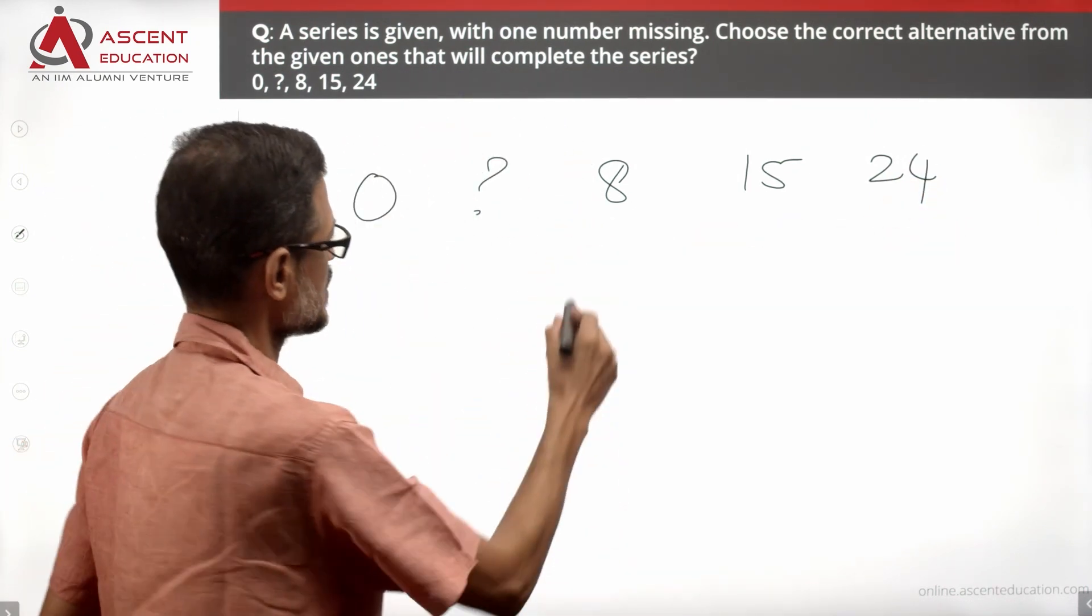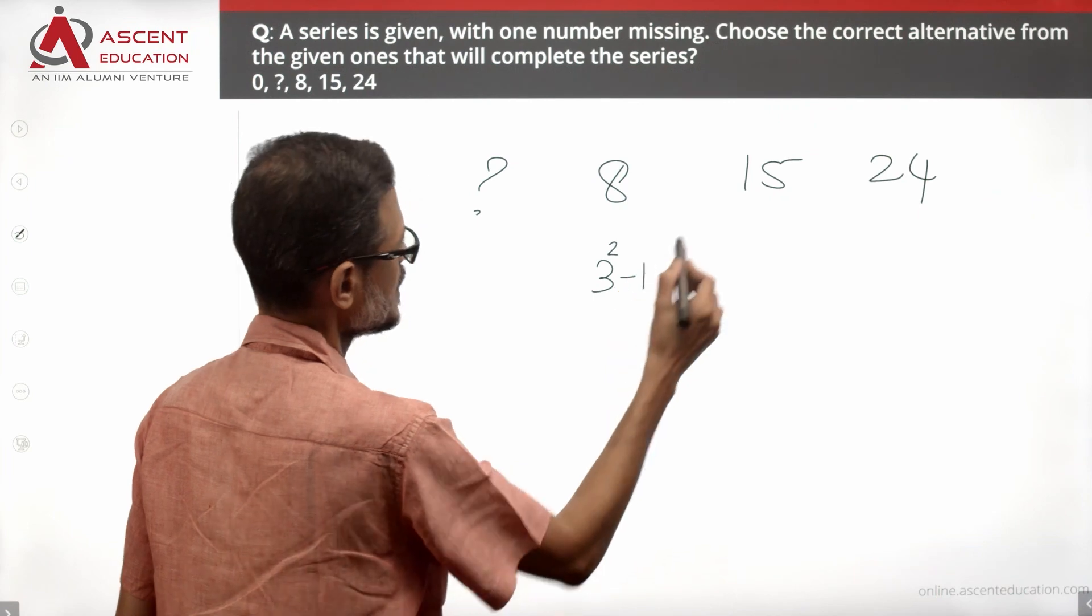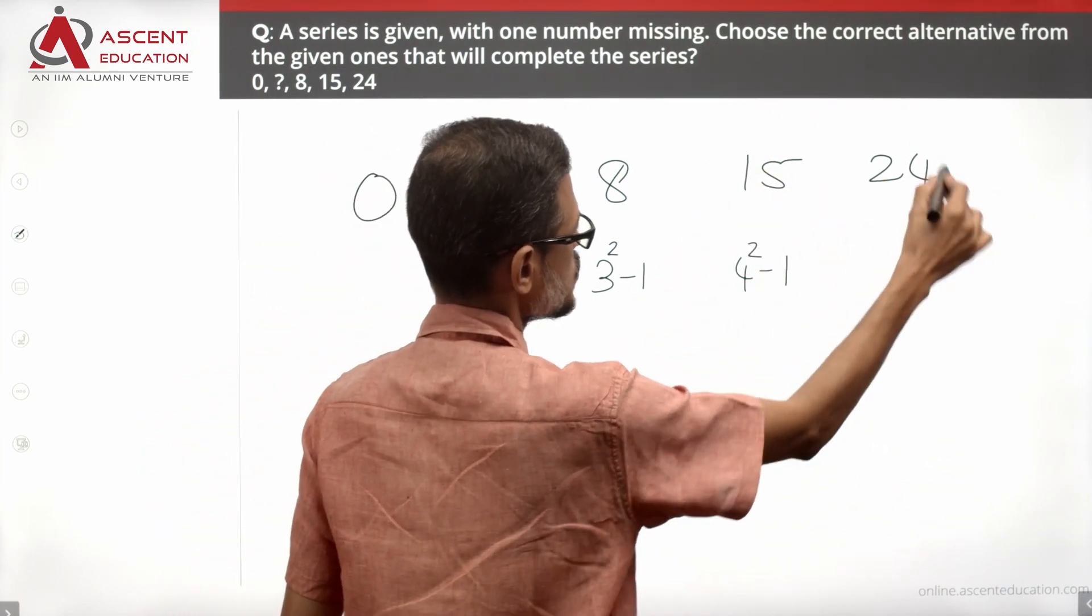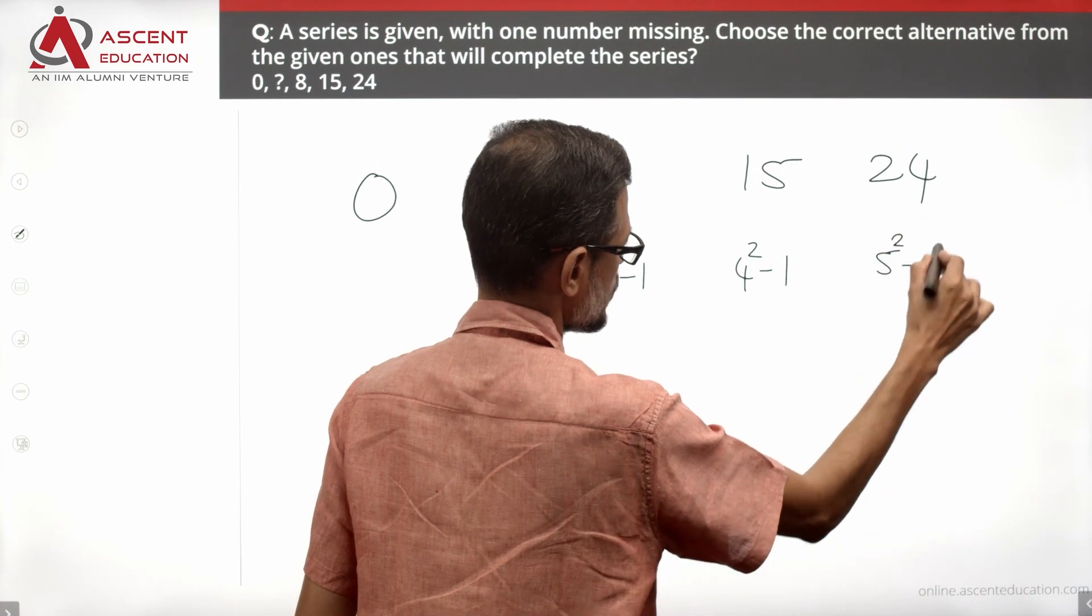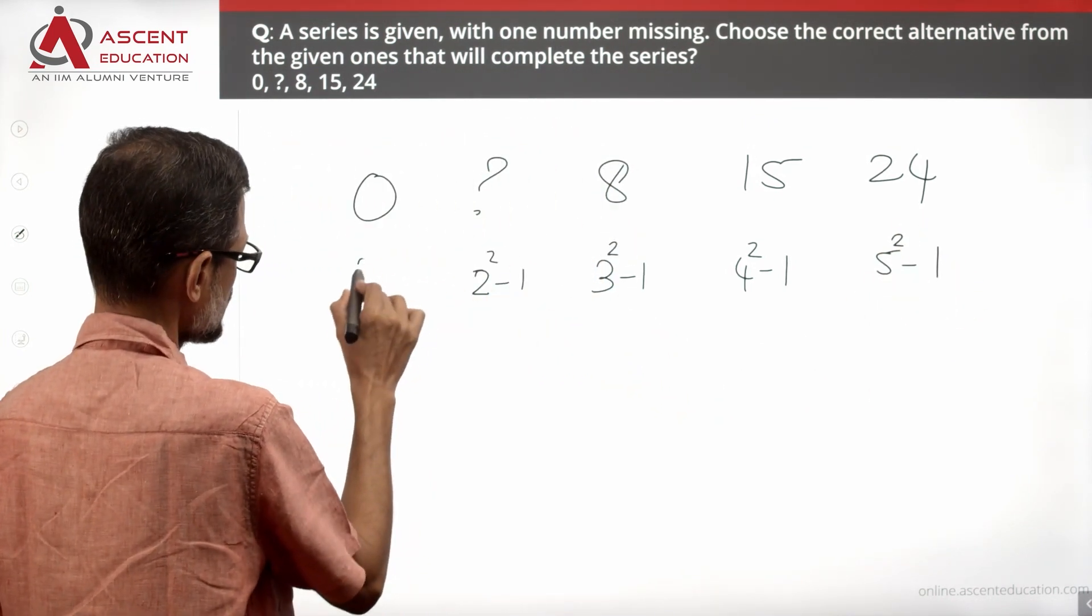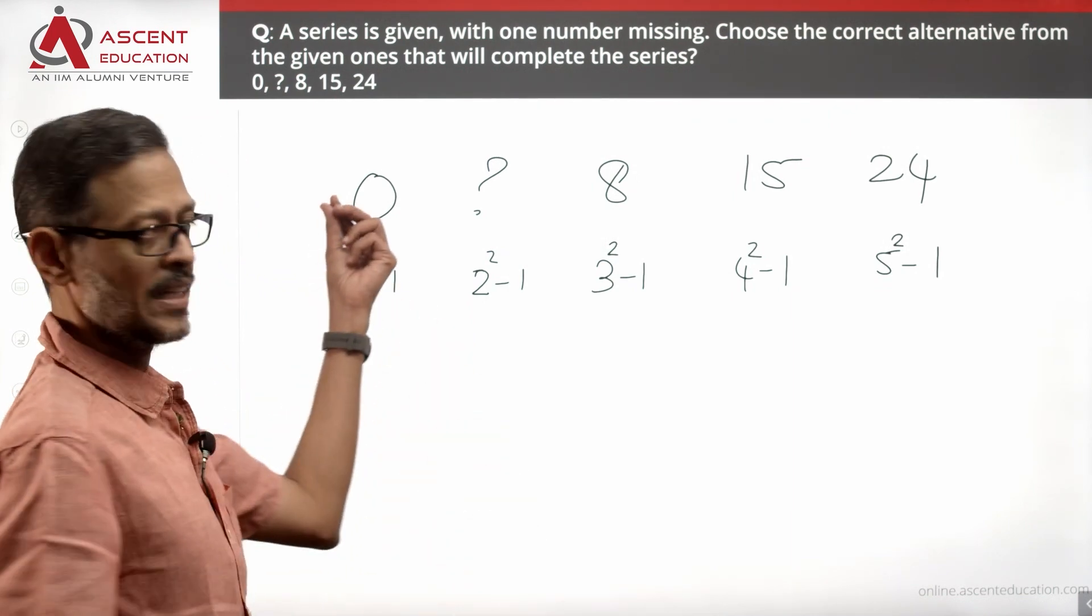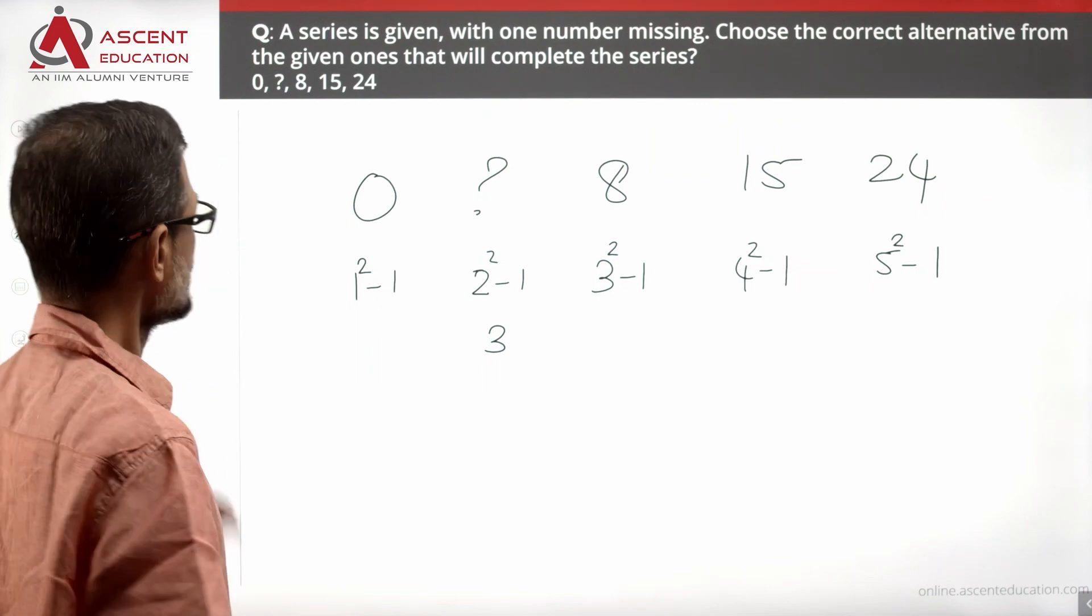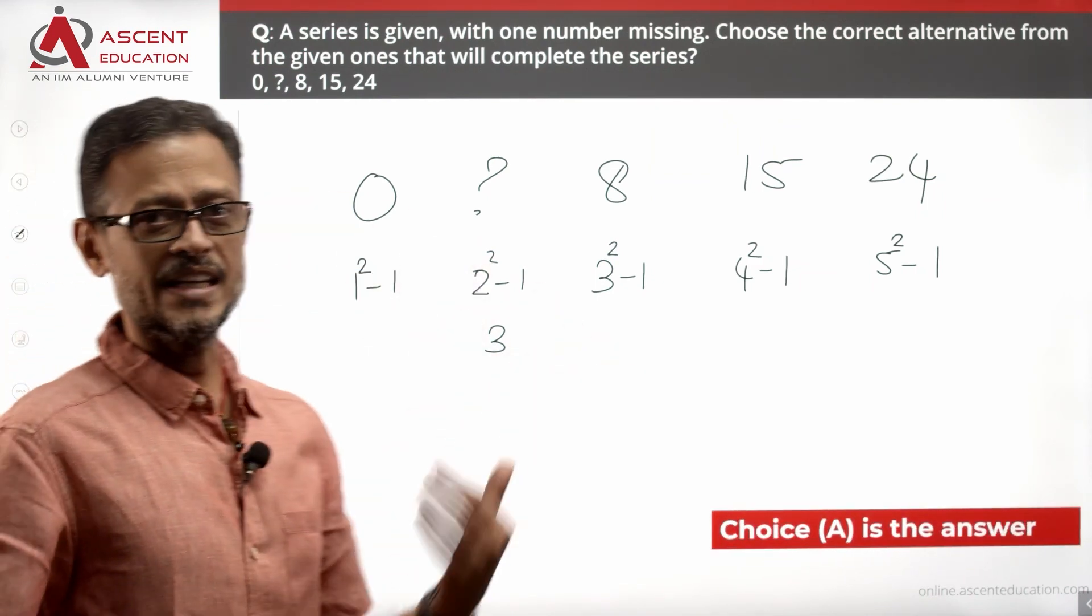8 is 9 minus 1, which is 3 squared minus 1. 15 is 16 minus 1, which is 4 squared minus 1. 24 is 25 minus 1, which is 5 squared minus 1. So it must be 2 squared minus 1. The first number: 1 squared minus 1, yes, 1 minus 1 equals 0. So 2 squared minus 1 is going to equal 3. So what is the missing number in the sequence? Choice A is the correct answer.